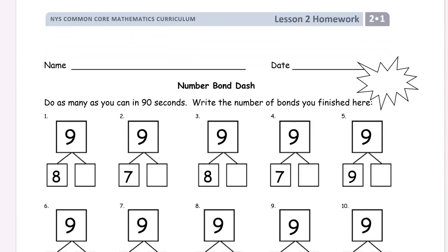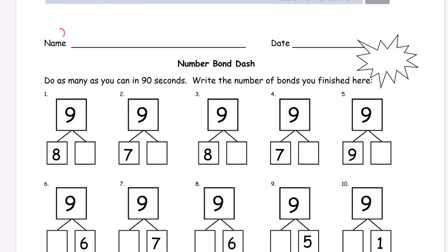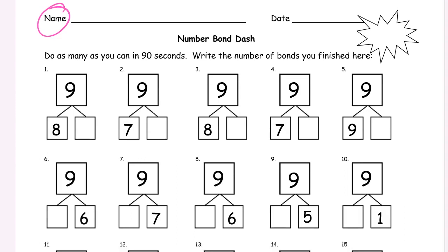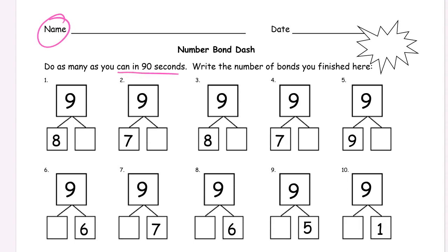I'll keep going here. On the second page, we have a number bond dash. Get your name on this page too. Now, the timer for the number bond dash, it says do as many as you can in 90 seconds right here. There's a few different ways you can do this. You set a timer. You can use a microwave oven will have a timer. You can ask Siri or Alexa or Cortana to say, Hey Siri, set a timer for 90 seconds. And she'll give you a few seconds to get ready. And then she'll start counting down and you get a little chirp.